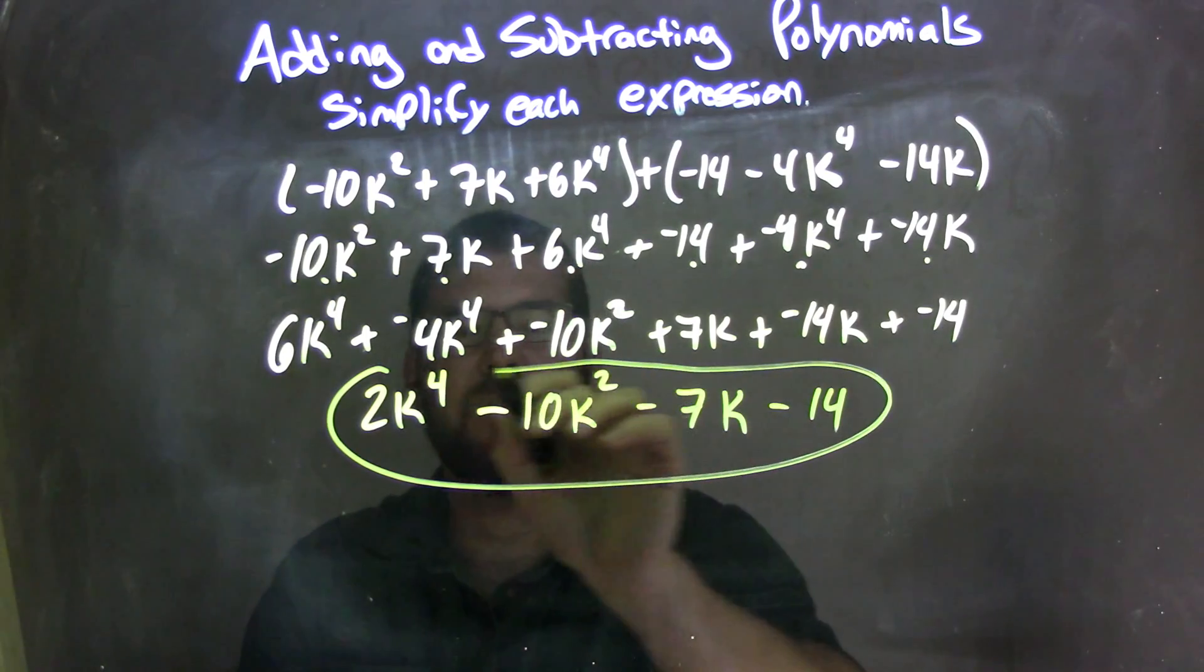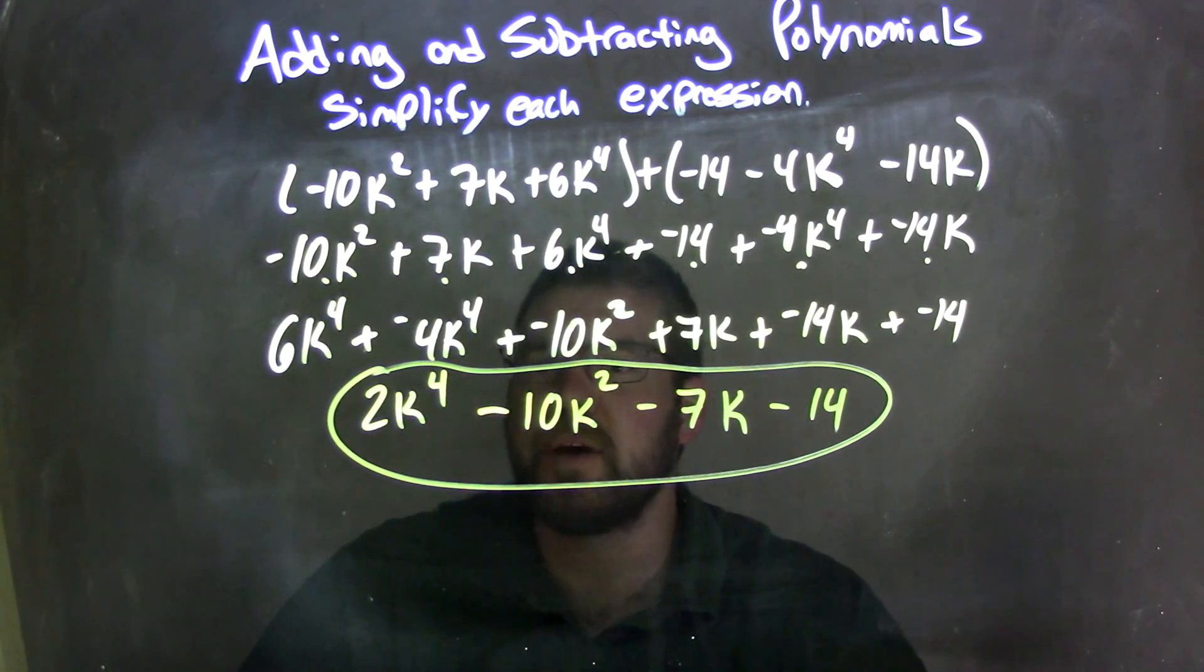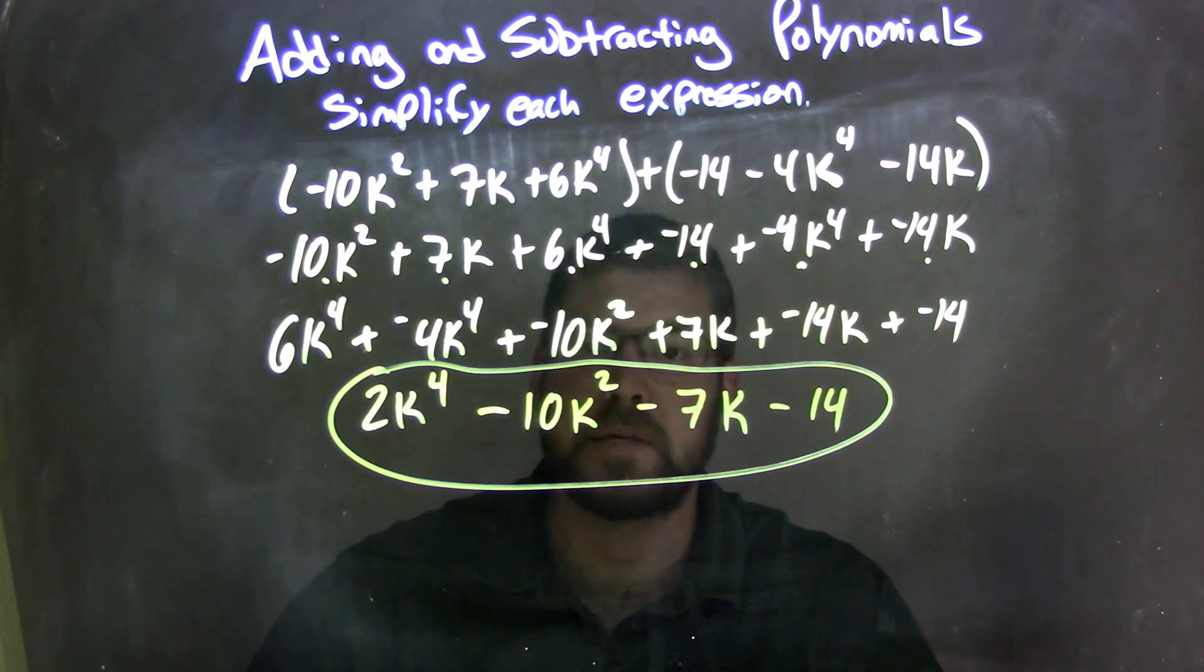You have our final answer looking nice and neat with subtractions. 2k to the fourth minus 10k squared minus 7k minus 14.